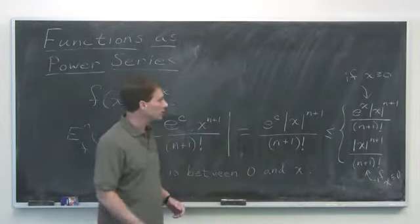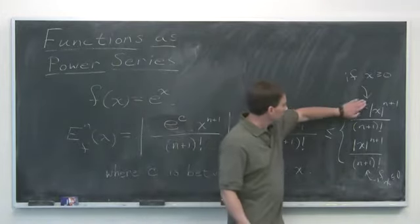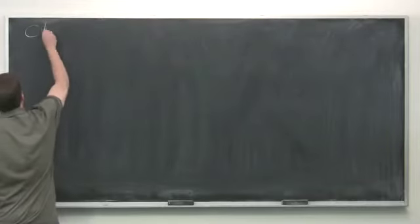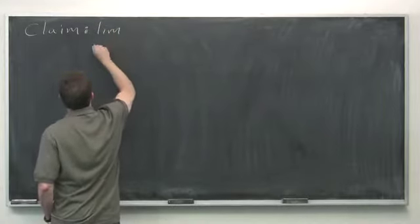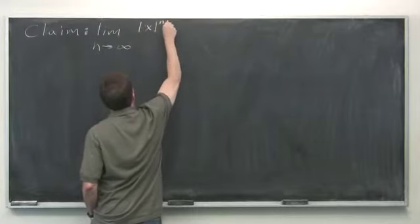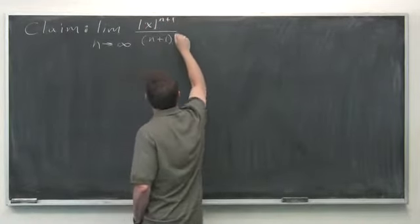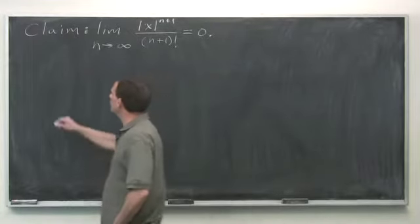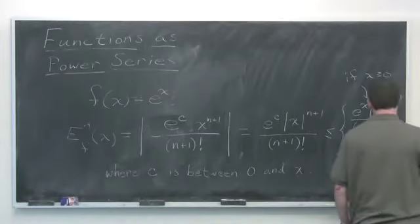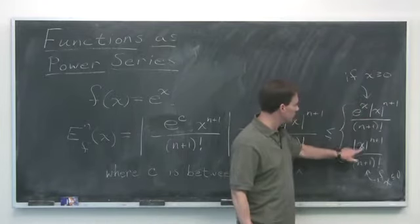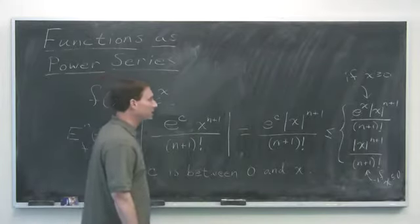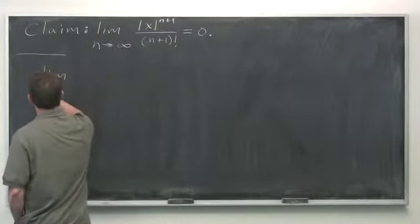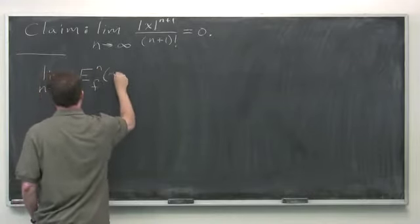What happens as n approaches infinity? Well, e^x doesn't change, and I claim that the limit as n approaches infinity of |x|^(n+1)/(n+1)! is zero — where x is fixed and we let n get very large. If that's true, then as n → ∞ both expressions go to zero, so in either case the limit as n → ∞ of the error is zero.